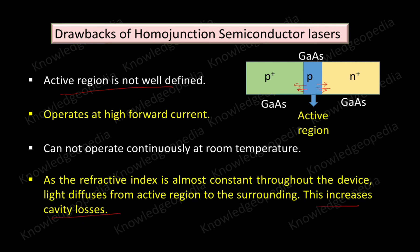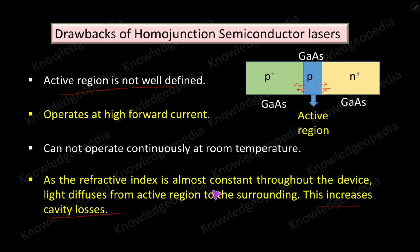To overcome these drawbacks, another semiconductor laser structure was proposed — the heterojunction semiconductor laser. Let us see how the heterojunction semiconductor laser overcomes all the drawbacks associated with homojunction semiconductor laser.